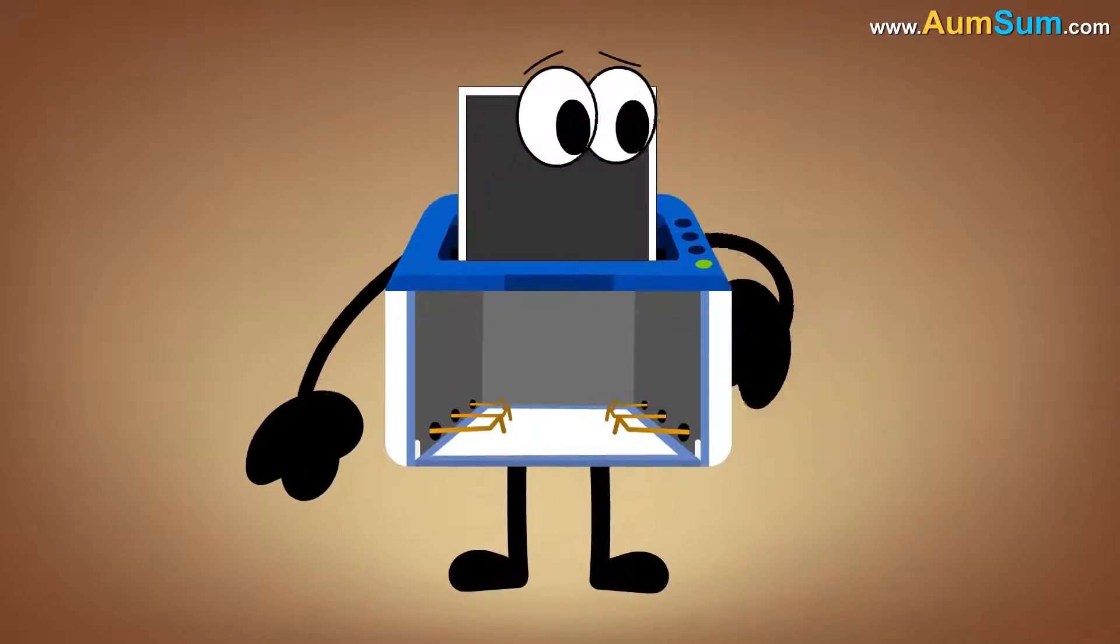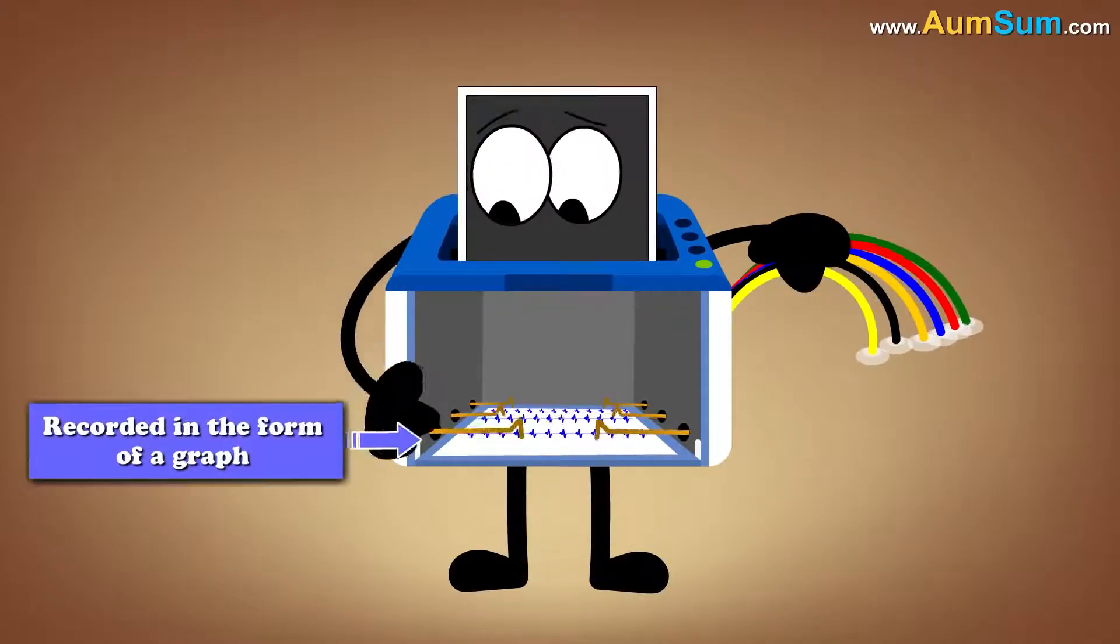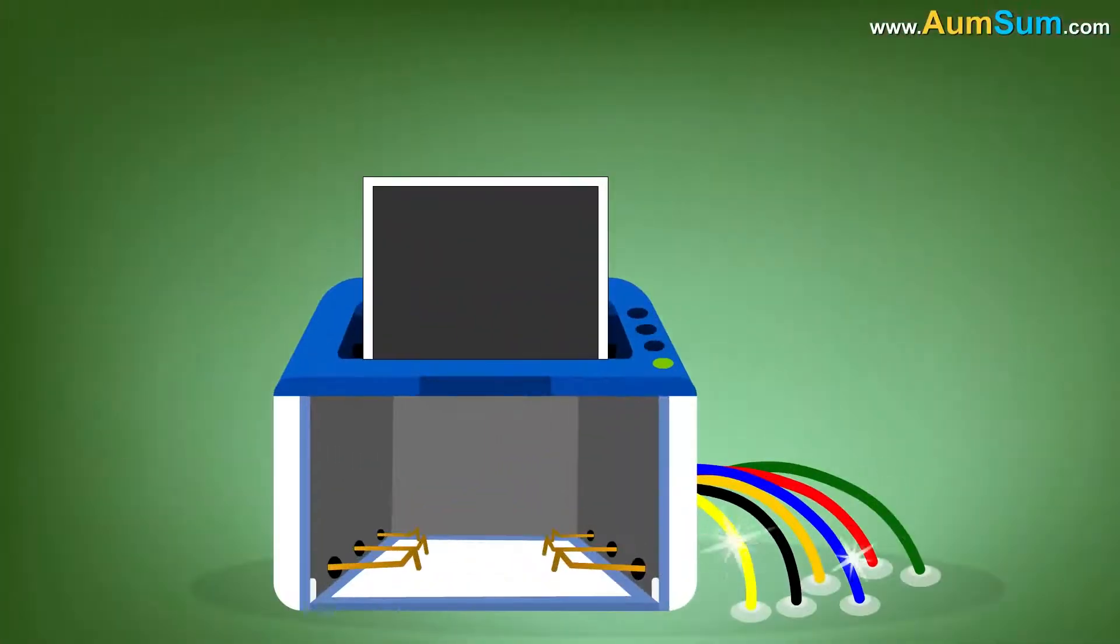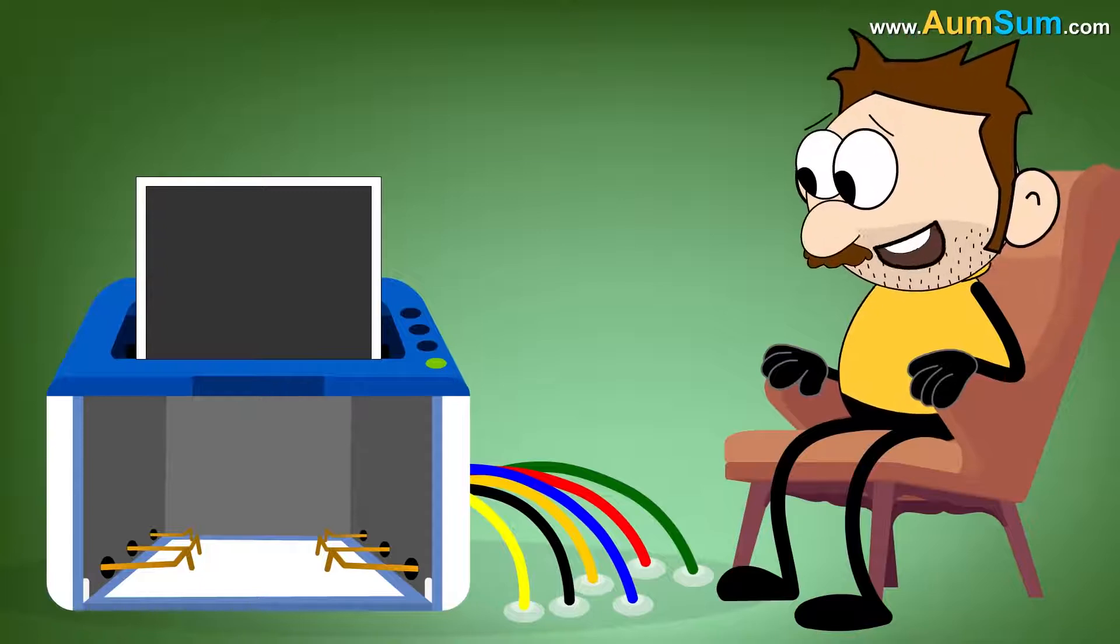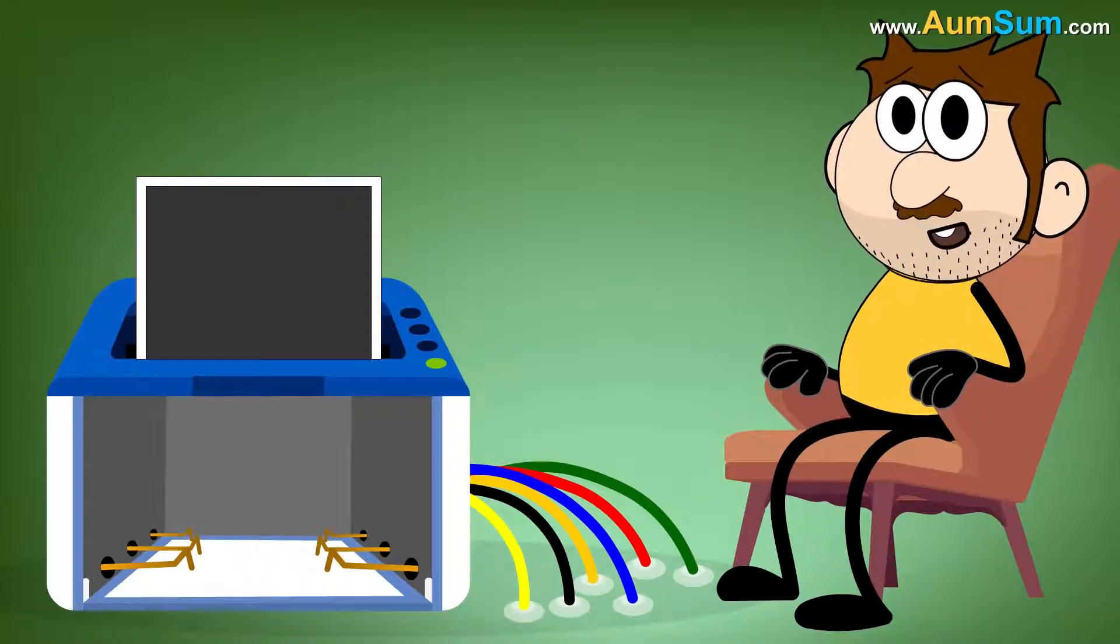A polygraph machine consists of multiple sensors whose response is recorded in the form of a graph on a single strip of paper. These sensors are attached to the person taking the lie detector test.